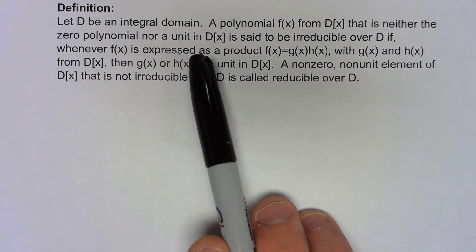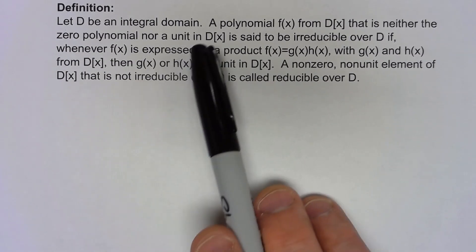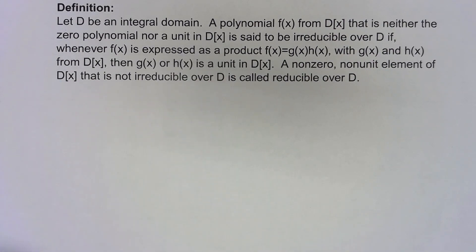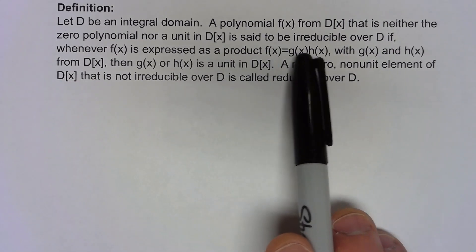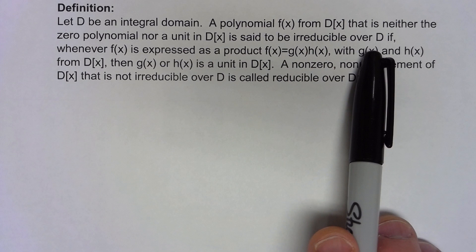So that means it doesn't have a multiplicative inverse. We'll say that it's irreducible over that whenever we can factor it into the product of two things one of those two things has to be a unit.